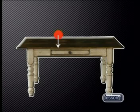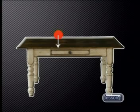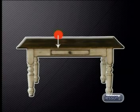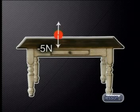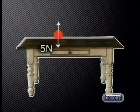Let's return to thinking about the forces operating on the book and the table, beginning with the interaction between them. All objects on Earth are pulled down due to gravity, so the Earth is exerting a force on the book. We call this downward force the weight of the book, and draw an arrow downwards. Let's assume the value of the force is equal to 5 N downwards, written as minus 5 N. By Newton's third law there must always be a pair of forces, so the table must exert a force on the book equal in magnitude but opposite in direction — that is, plus 5 N upwards. This upward force is an example of the normal force.